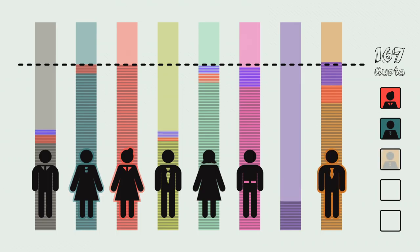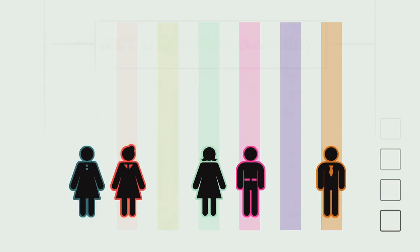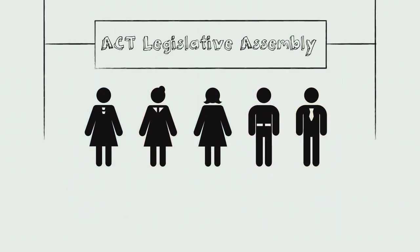The process of distributing surplus votes from elected candidates and excluding the candidate with the fewest votes goes on until all the vacancies are filled. The winning candidates from each electorate will be elected as members of the ACT Legislative Assembly.